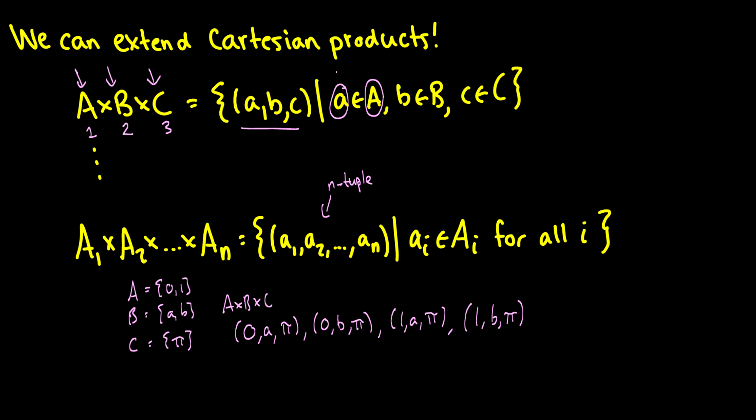And you can see that the cardinality of A cross B cross C is the same thing as A times B times the cardinality of C. So this previous thing we talked about just extends to n sets and an nth Cartesian product.